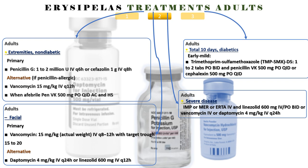Diabetic form, early mild: Trimethoprim-sulfamethoxazole (TMP-SMX) DS 1 to 2 tabs by mouth twice a day, and penicillin VK 500 mg by mouth 4 times a day, or cefalexin 500 mg by mouth 4 times a day.